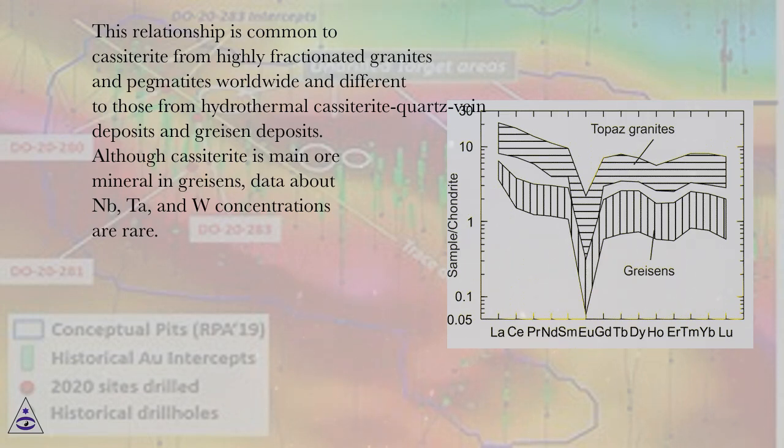Although cassiterite is main ore mineral in greisens, data about Nb, Ta, and W concentrations are rare.